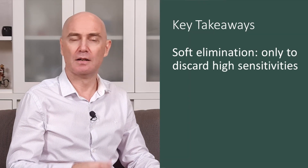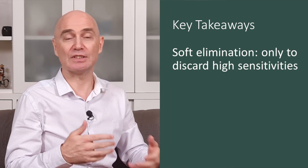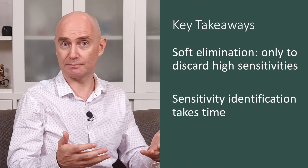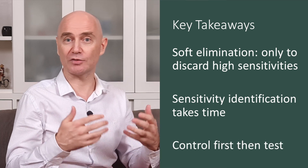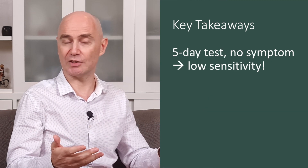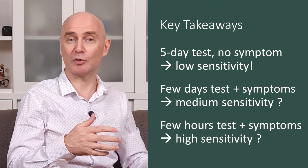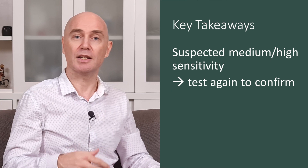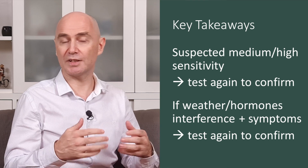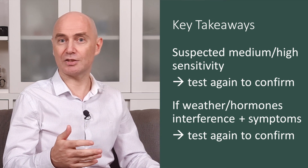Takeaways: Soft testing is fast and simple, but unfortunately it's not efficient beyond discarding some high sensitivities. Identifying sensitivities takes time, so do take your time. Control all controllable risk factors first, then test. If no symptoms after five or more days of testing — low sensitivity. If symptoms appear after a few days — potential medium sensitivity. If symptoms appear within one day — potential high sensitivity. In both cases, test again at a later stage to confirm. Do not conclude on tests with symptoms if you suspect interference from hormones or weather-related risks — test again at a later stage and discard those results.